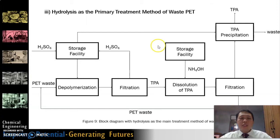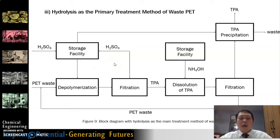Next, hydrolysis will be used as the primary treatment method. Hydrolysis is the decomposition of waste PET in an acidic, alkaline, or neutral environment. We will be using sulfuric acid to treat waste PET in acidic conditions. As shown in Figure 9, waste PET is depolymerized using sulfuric acid to produce TPA crystals. These crystals are separated from the sulfuric acid, which can be recycled. Ammonium hydroxide is then used to neutralize the remaining sulfuric acid, and a final precipitation step recovers the TPA crystals.